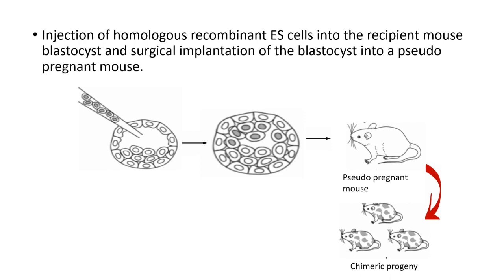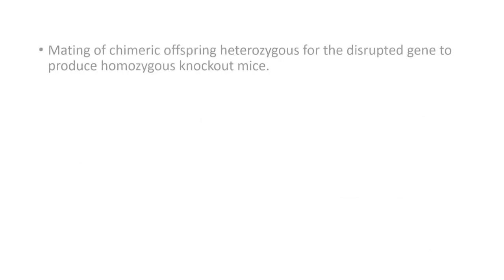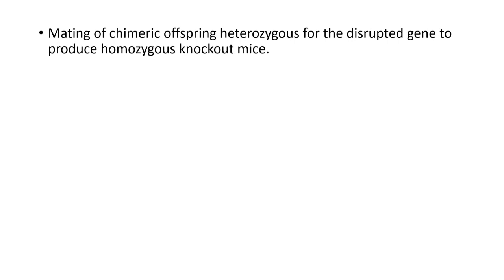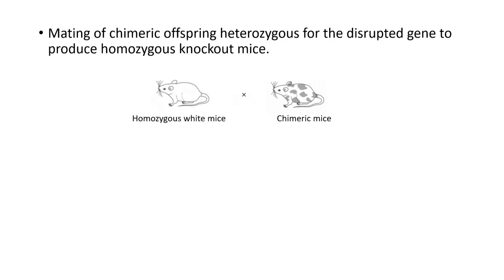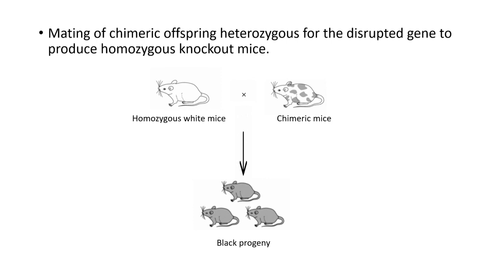The chimeric progeny produced will have black and white coats. We then mate the chimeric offspring — which are heterozygous for the disrupted gene — to produce homozygous knockout mice. We mate the chimeric mice with homozygous white mice, producing black progeny derived from germline cells originating from the embryonic stem cells, which are heterozygous for the disrupted gene X.